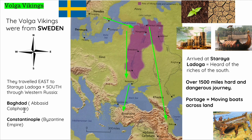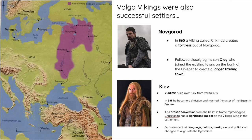Baghdad is the Abbasid Caliphate; Constantinople is the Byzantine Empire. These journeys were treacherous and difficult — 1,500 miles to travel, with rapids and portaging across land where they risked being robbed. It was a really difficult and dangerous journey. To make that journey, they needed settlements — in Novgorod and in Kiev — which meant they could control the whole of the river route in Western Russia.